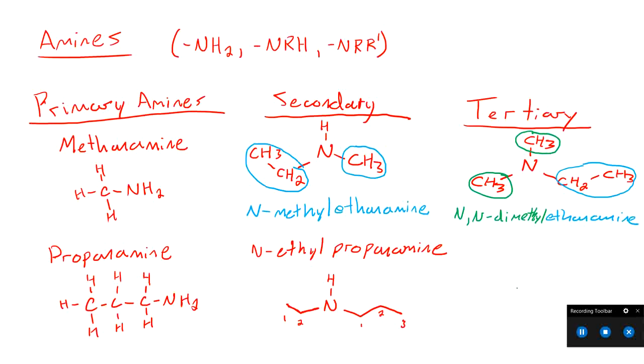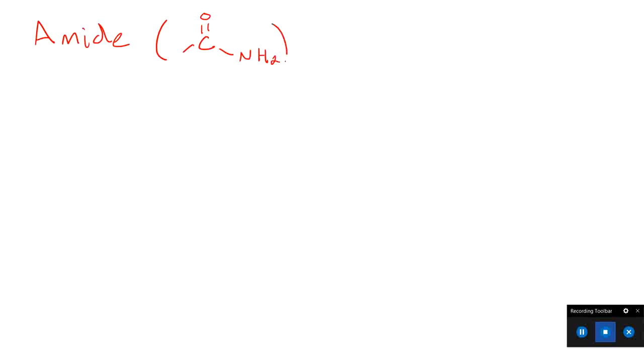The last nitrogen-containing group we're going to look at is amides. Amides are similar to carboxylic acids, except instead of the OH on the end we have an NH₂ group. An amide is when we have a group that looks like C double bonded to an oxygen and then attached to a nitrogen. We can have primary, secondary, and tertiary amides since that nitrogen can have different numbers of carbons on it. They are named similarly to amines, except the ending is 'amide' instead of 'amine'.